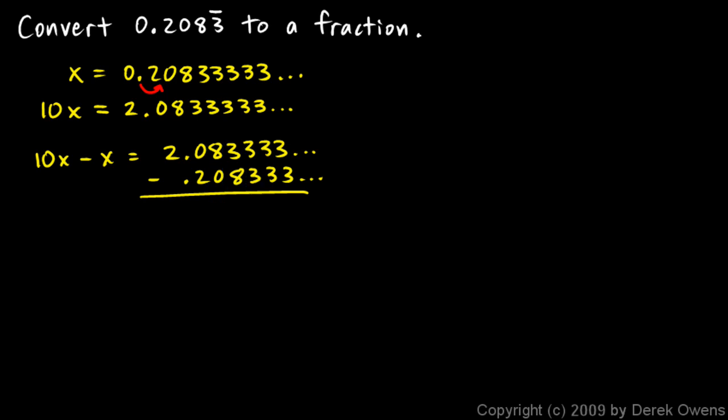And you should be able to see that over here in the ten thousandths place and beyond, all of these threes here are going to cancel out. Because all the threes from this row get subtracted away in this second row. And so this problem just becomes what's left right here, the 2.083 minus the 0.208.